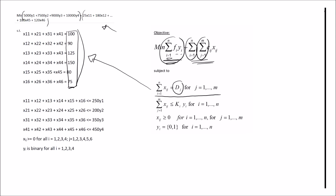The first constraint set is the demand constraints, written for all j values — there are six of them. The right-hand side is dj. On the left-hand side, xij is summed over i. We can verify this by looking at the first constraint: the first index goes 1, 2, 3, 4 (increasing) while the second index stays at 1, confirming we are summing over the first index, which is i. The right-hand side index is j, so the constraint holds for all j values.